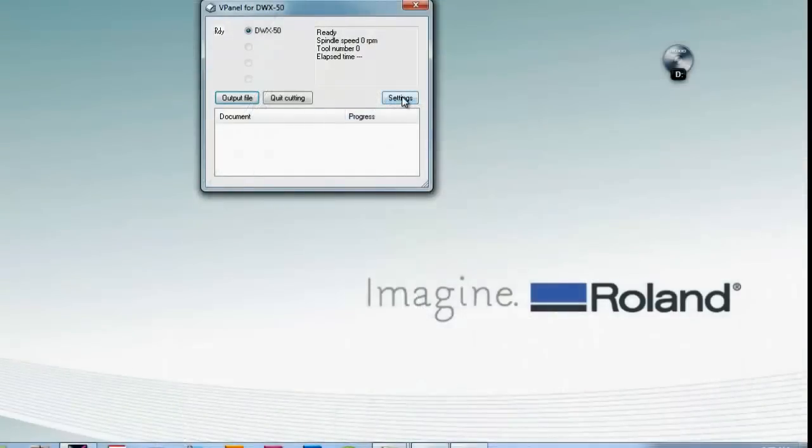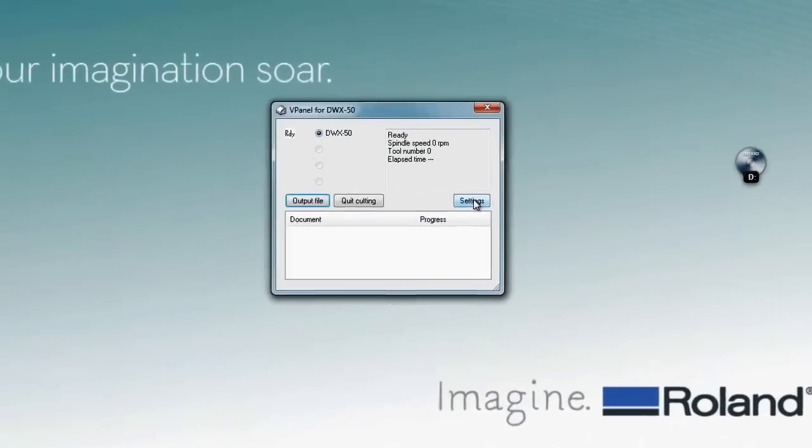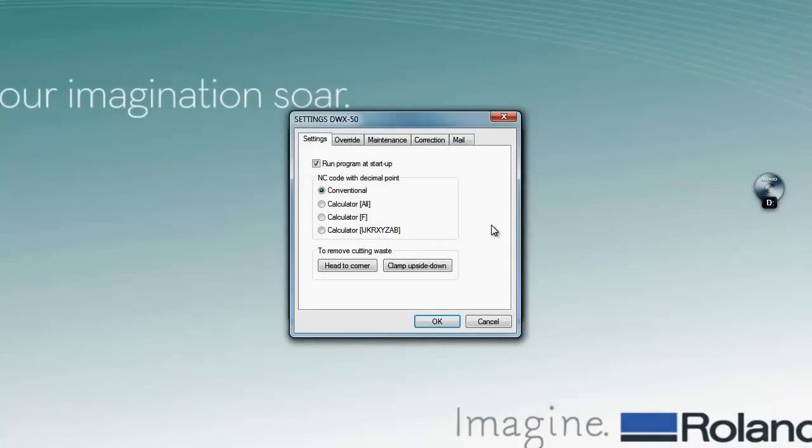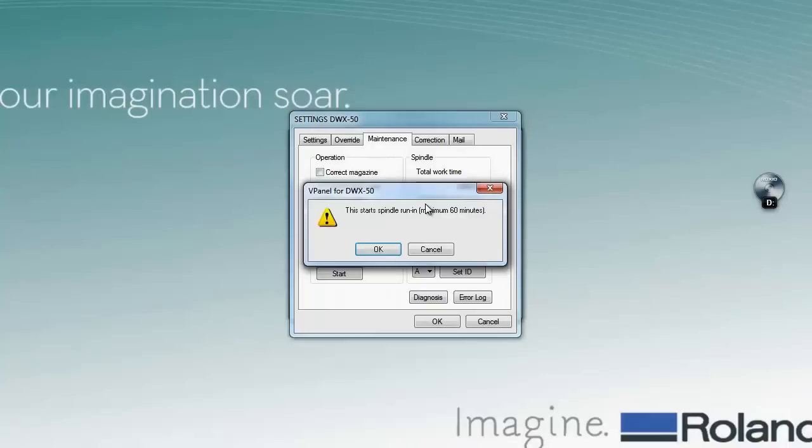Before the calibration, you will run the spindle run-in by clicking on the settings tab in virtual panel. Then you'll go to your maintenance tab. You'll see the run-in button. You click on that and click OK. It could take up to 60 minutes for this process to finish.